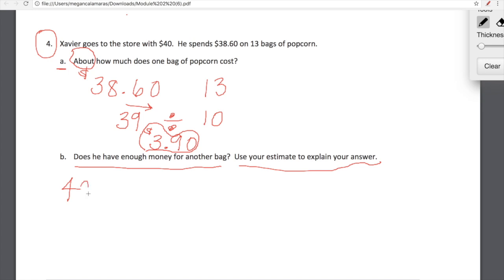Our next question says does he have enough money for another bag? Use your estimate to explain your answer. So he has $40, he bought 13 bags of popcorn for $38.60. If each bag is about three dollars and 90 cents, can we squeeze another three dollars and 90 cents into, I'm sorry, out of 40? Let's think about that. So he spent $38.60, we rounded that to 39. We'll say if we're just rounding, we'll round three dollars and 90 cents, I did not mean to do that, we'll round that to four. 39 plus 4 is 43. He only has $40.